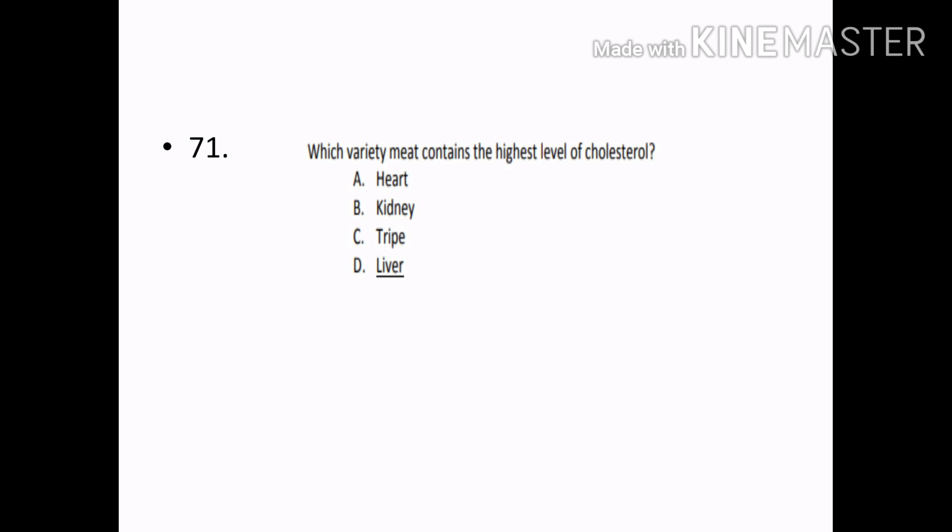Which variety meat contains the highest level of cholesterol? Options — Heart, Kidney, Tripe, Liver. Correct answer: Option D — Liver.